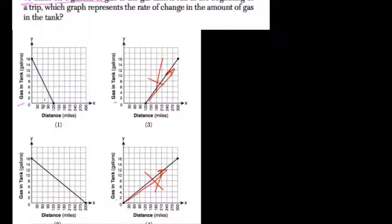So if we look here at about 75 miles, we're at 6 gallons, which means we did use 4 gallons of gas.